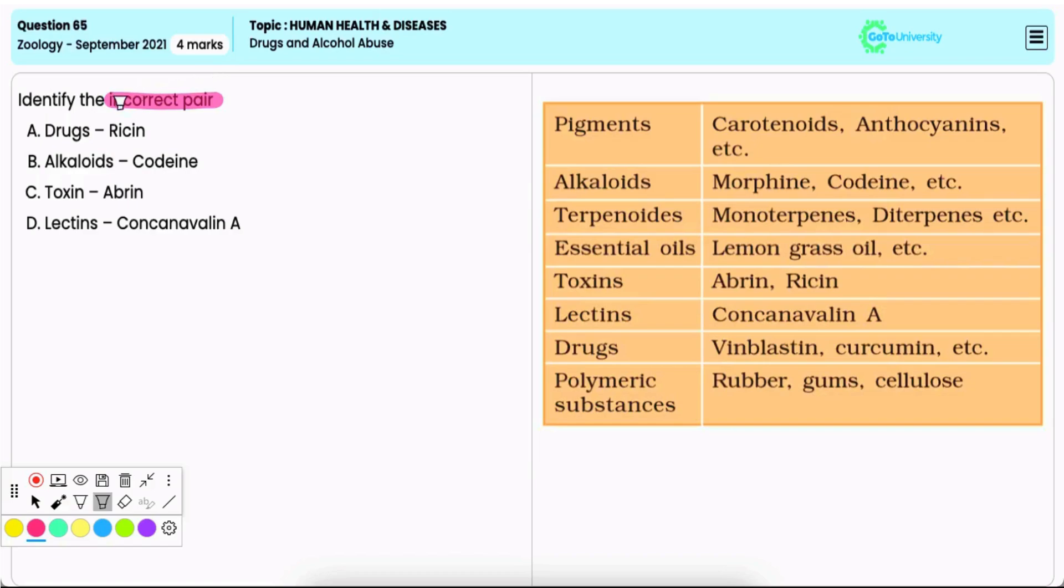Option A, drugs is to racine. Now, this is incorrect because racine is not a drug. It is a highly toxic protein obtained from the seeds of the castor oil plant, that is Racinus communis. Hence, it is the correct option.